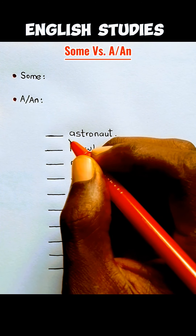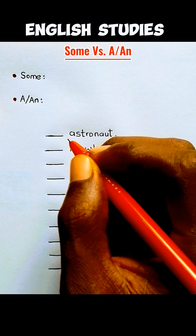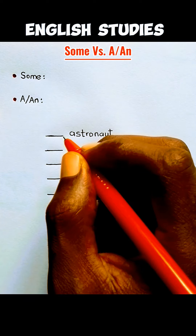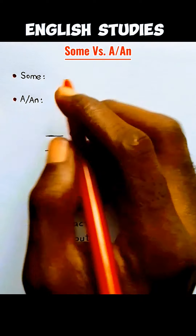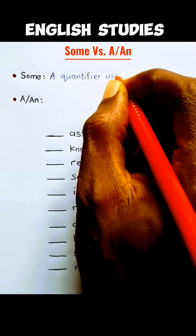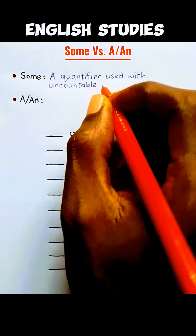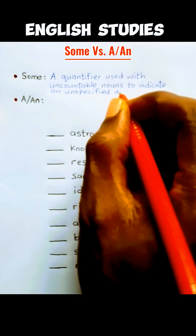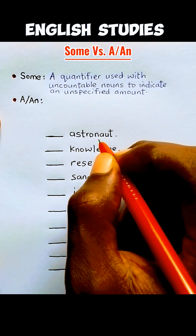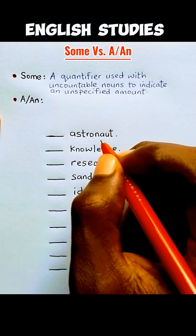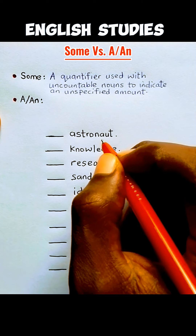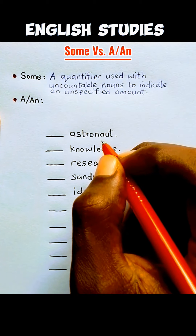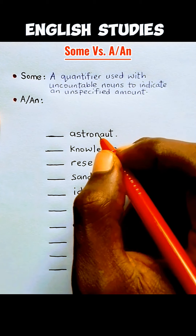In this video, we are going to see the difference between 'some' versus the articles 'a' and 'an,' and how to use them correctly. 'Some' is a quantifier that is used with uncountable nouns to indicate an unspecified amount. We use 'some' to quantify nouns that we cannot count. If you cannot determine the specific amount of a noun, then use 'some' to quantify it.